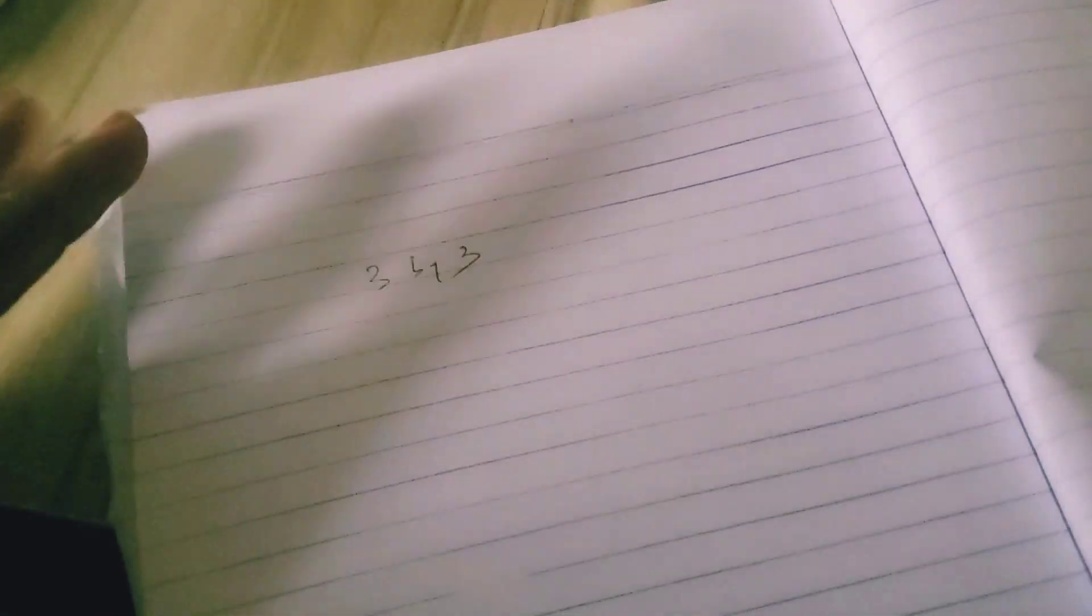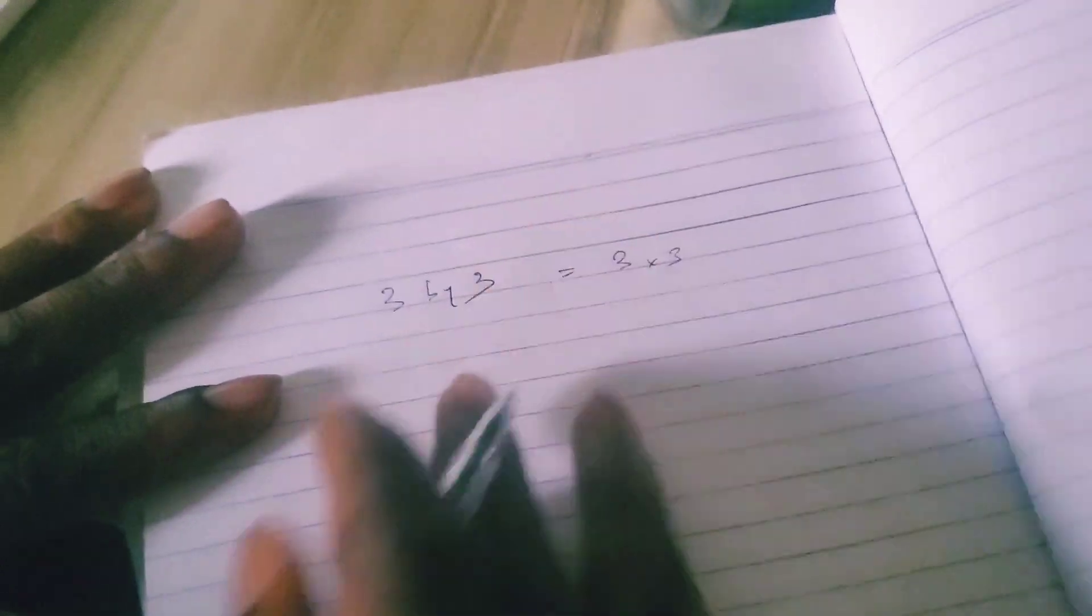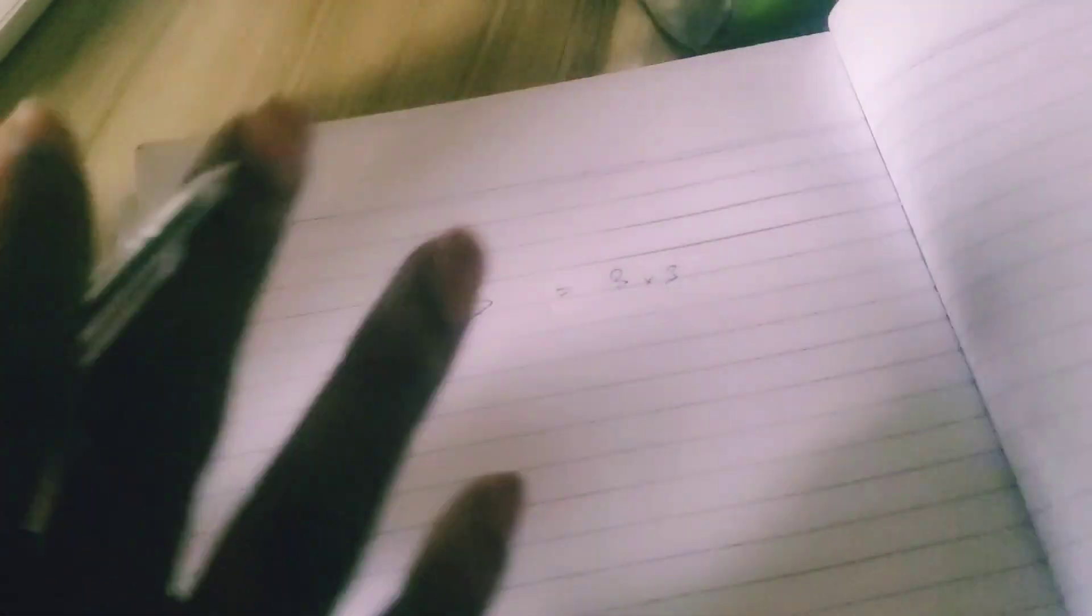So guys, let us get into this. Okay guys, welcome back here once again. So today we're solving 3x3 equation. It is very simple. 3x3 is the same thing as 3 times 3, which means you're going to multiply 3 in 3 places.